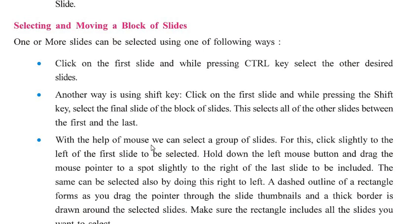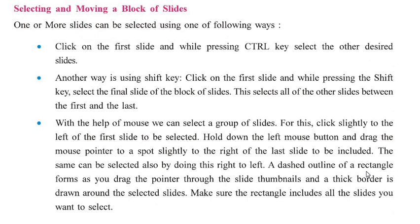Another way is using the Shift key. First click on the first slide you want to select, then press and hold the Shift key and press the Down Arrow key, or use the mouse. This selects all slides between the first and the last in a continuous pattern. You can also select a group of slides with the mouse by clicking slightly to the left of the first slide, holding the left mouse button, and dragging to slightly to the right of the last slide. A dashed rectangle outline forms as you drag, and a thick border is drawn around the selected slides.